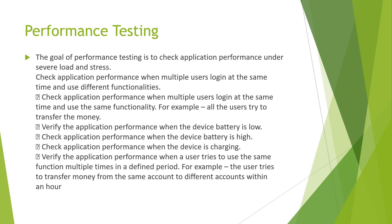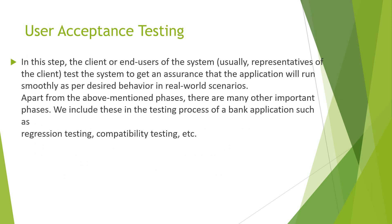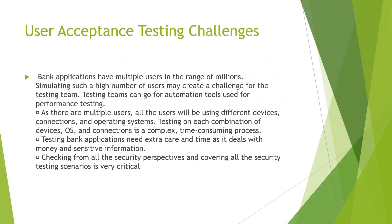User Acceptance Testing (UAT) involves the client or end users testing the system to get assurance that the application will run smoothly in real-world scenarios. Apart from the above phases, other important phases include regression testing, smoke testing, compatibility testing, and sanity testing. A major challenge is that banking applications have millions of users — simulating such a high number of users is challenging, and automation tools are recommended for performance testing. Testing across multiple devices, OS combinations, and connections is also complex and time-consuming.